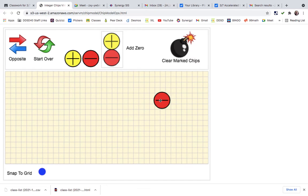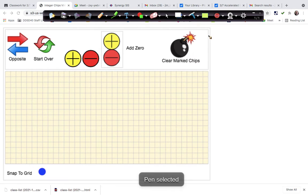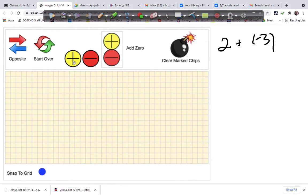Today in class we used integer chips. So we could do a problem here. I'll just write it over here, for example 2 plus a negative 3 by doing this.